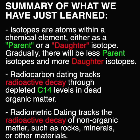So far we have learned that isotopes are atoms within a chemical element, either as a parent or daughter isotope, and gradually there will be less parent isotopes and more daughter isotopes. Radiocarbon dating tracks radioactive decay through depleted C-14 levels in dead organic matter, and radiometric dating tracks the radioactive decay of non-organic matter such as rocks, minerals, and other materials. There is a difference between radiocarbon and radiometric dating, and by making this distinction we can provide a more accurate answer when considering the following.